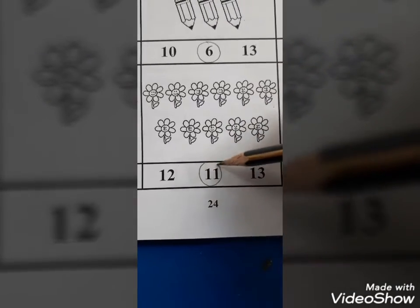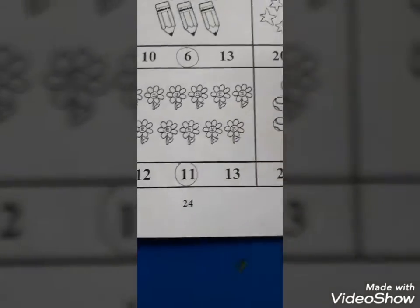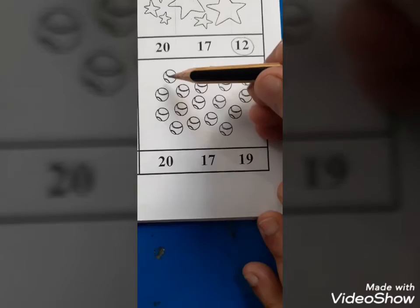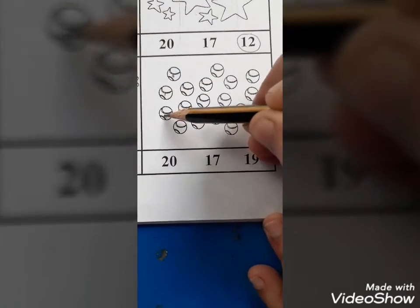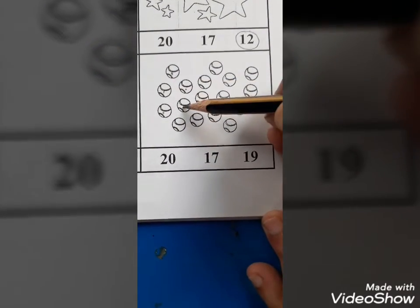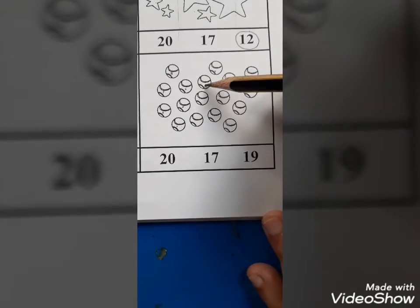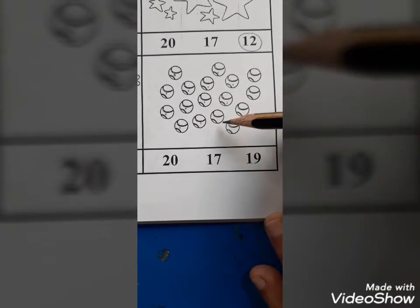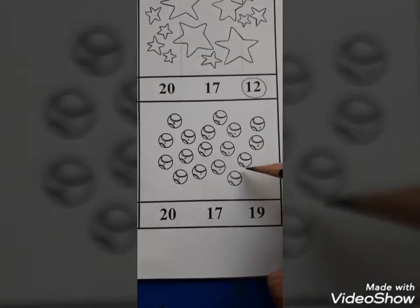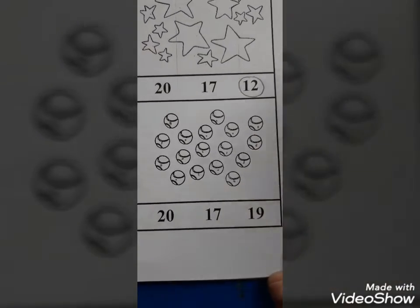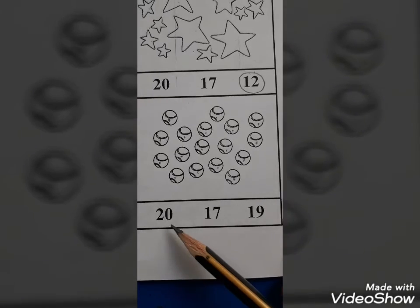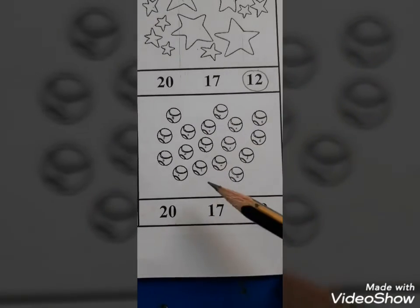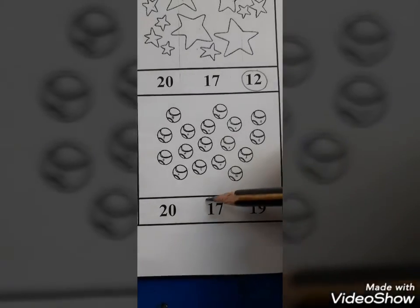And the last objects are balls. Now start to count with me with marks: 1, 2, 3, 4, 5, 6, 7, 8, 9, 10, 11, 12, 13, 14, 15, 16, 17. So here are three options like 20, 17, 19. How many balls are there? 17. So you have to circle this.